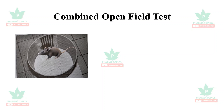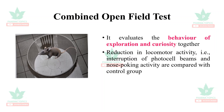The combined open field test evaluates exploration and curiosity together. The reduction in locomotor activity — that is, the interruption of photocell beams, which are recorded when an animal crosses them — and nose-poking activity are compared with the control group.